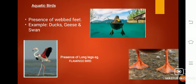Aquatic birds are those birds that live around water. They have webbed toes to move in water. For example, swan, geese and ducks. You can see the long legs of flamingos.